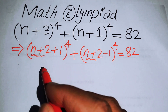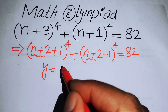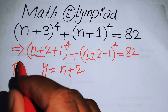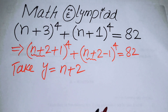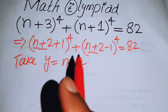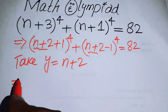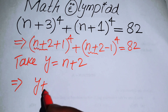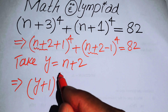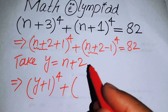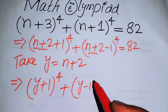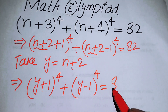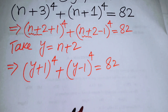After this step we will convert this equation into the simplest form. We can see that (n+2) is the common part, so we let y = n+2. The equation then reduces to (y+1)⁴ + (y−1)⁴ = 82.